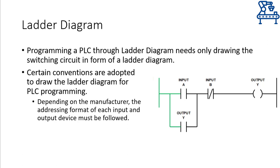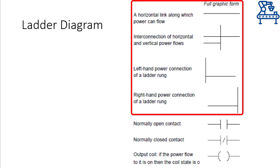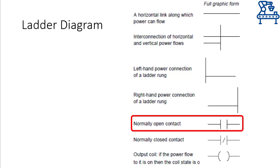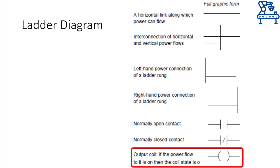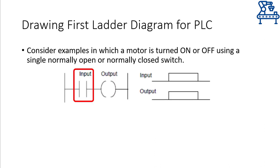Depending on the manufacturer, the suitable format for addressing input and output devices should be used. The standard symbols used in ladder diagrams include: lines representing power connections, a normally open contact symbol, a normally closed contact symbol, and an output coil symbol that may represent any connected output — whether an LED, a motor, or another actuator. If you want to turn on a motor through a single normally open switch, the switch is connected in series with the output coil. When pressed, power flows through the coil turning it on; when released, the output is de-energized. With a normally closed switch instead, the output coil is energized when the switch is not pressed and turns off when the switch is pressed.